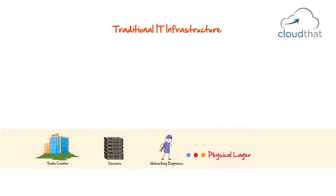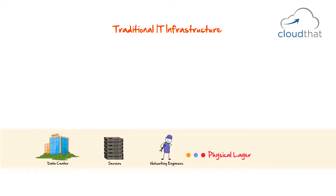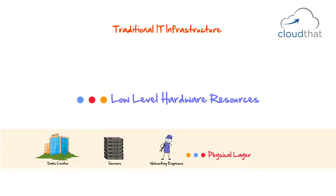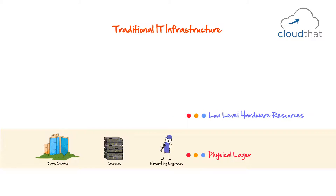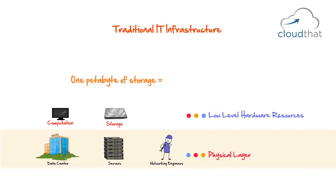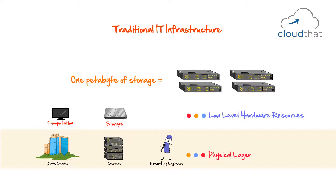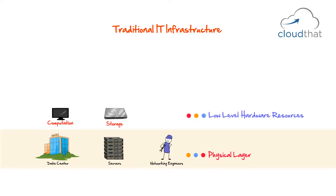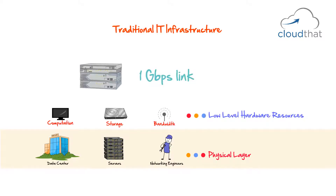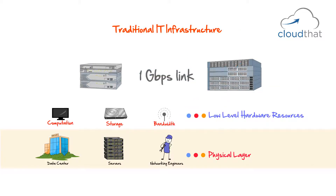The physical layer allows us to have what we call the low level hardware resources layer. Most people like to think in terms of low level hardware resources. They will say things like we have one petabyte of storage capacity, but they might not know how many hard disks or servers it took to reach that amount. Similarly, they might say we have a one GBPS link, but they might not be concerned with how many routers or switches are present and what kind of networking configuration has been done.